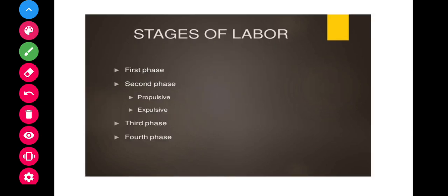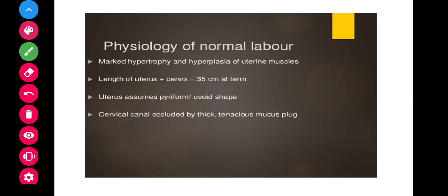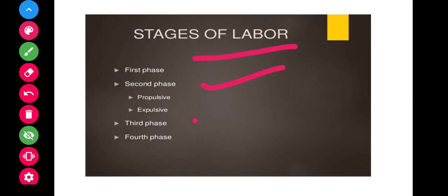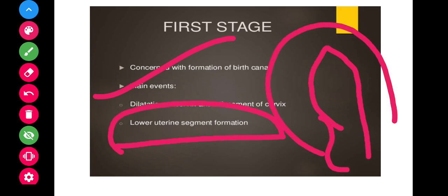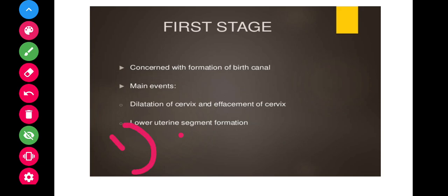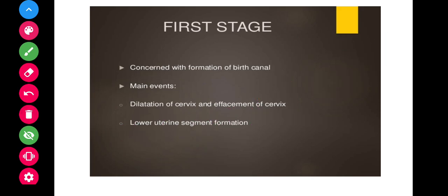There are four stages of labor. The first stage is concerned with the formation of the birth canal and is also called the cervical stage. The main events are dilatation and effacement of the cervix, lower uterine segment formation, and descent of the baby. This stage starts with true labor pains and ends with full dilatation of the cervix.